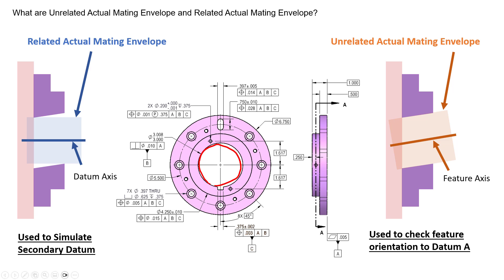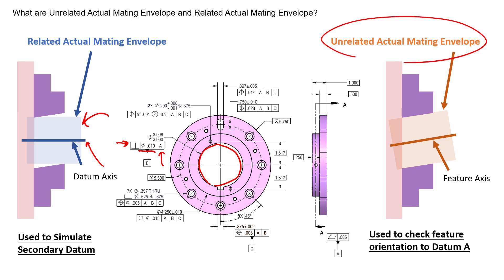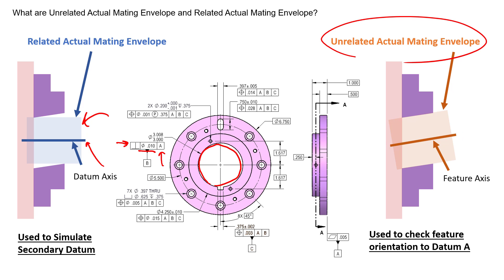On the other side, for this feature control frame right here, we're checking the perpendicularity of our feature to ten thousandths diametrically with respect to A. If we were to check this axis and its perpendicularity with respect to A using the related actual mating envelope, we would see perfect perpendicularity every time using this axis. So in order to actually check a feature, we need to create the feature's axis. In order to do that, we use the unrelated actual mating envelope. This is an envelope that expands inside the cylinder and adheres to any orientation or location error that the feature might have — it expands inside that cylinder and settles out on the radial high points. For those in the inspection world, this looks a lot like a best fit gauge pin.